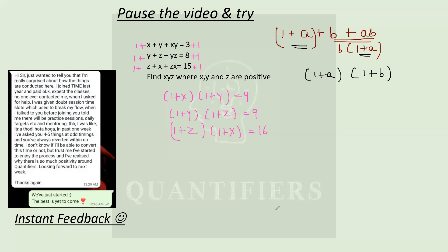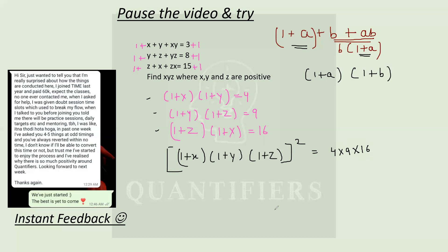Now students, the best method here is to simply multiply these three equations together. If you multiply all three, you'll be getting one plus X whole square, because one plus X appears two times. Similarly, one plus Y whole square and one plus Z whole square. So ultimately I'll have one plus X into one plus Y into one plus Z, whole squared, equal to four into nine into 16. Now four into nine into 16 is a perfect square — it equals two into three into four, whole squared. Cancelling the square on both sides, I get one plus X into one plus Y into one plus Z equals two into three into four, which is 24.